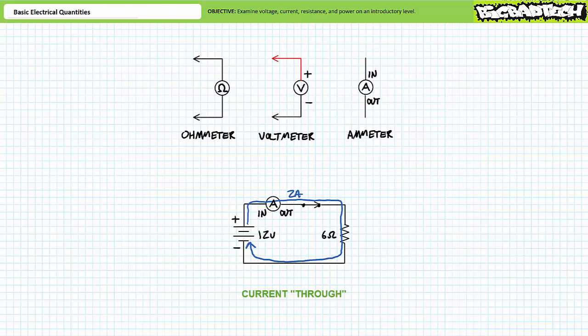The point being, the ammeter is a single point through which all current must flow if it is to properly be measured. If one flip-flopped the orientation of the in door and the out door of the ammeter, the ammeter would think two amps would be leaving it and would display negative two amps.